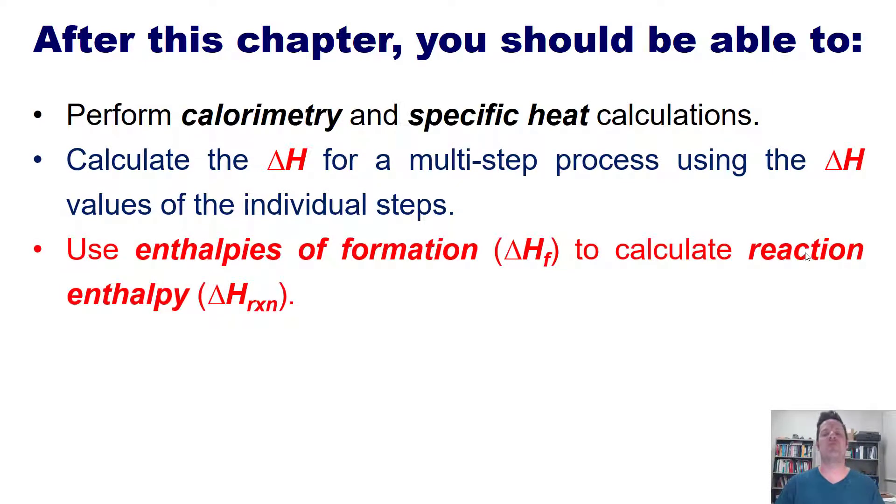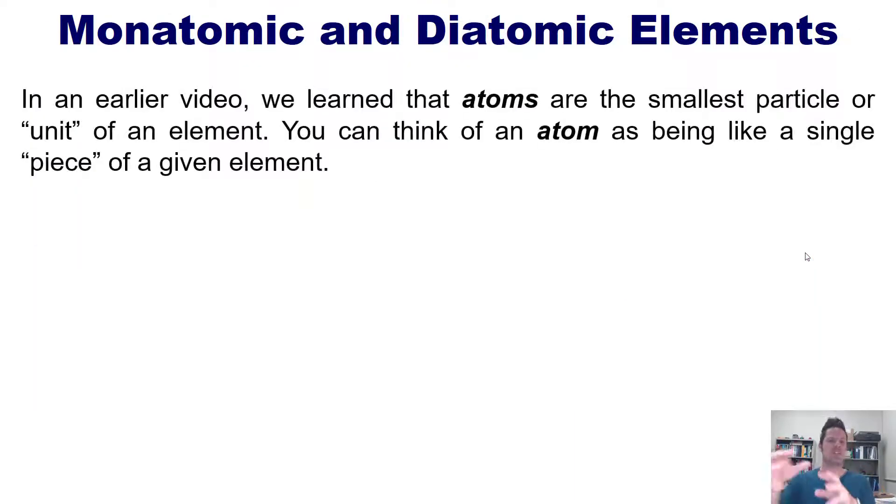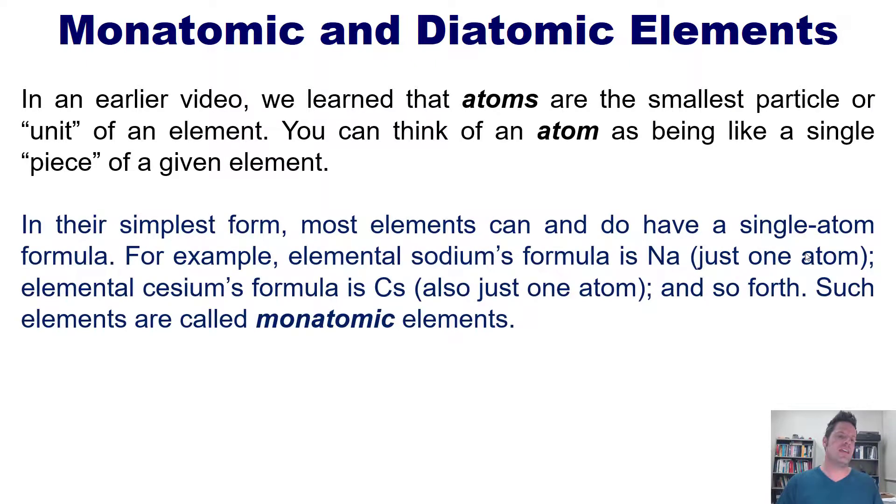So in an earlier video, linked to in the description below as well as here somewhere, we learned that atoms are the smallest particle or unit of an element. You can think of an atom as being like a single piece of a given element. In their simplest formula then, most elements can and do have a single atom formula. For example, elemental sodium's formula is Na, just one atom. Elemental cesium's formula is Cs, also just one atom, and so forth. Such elements are called monatomic elements.